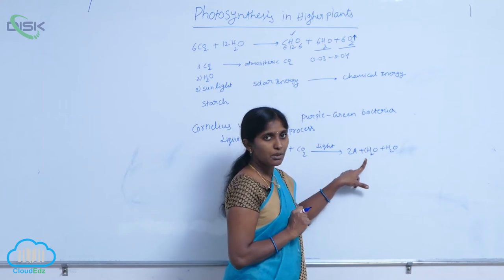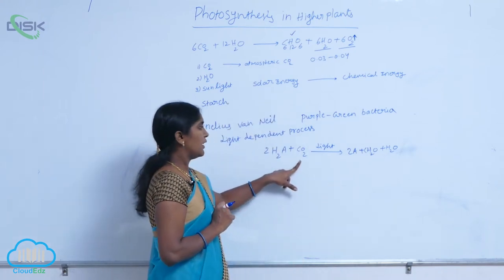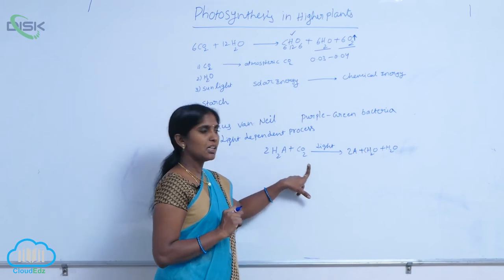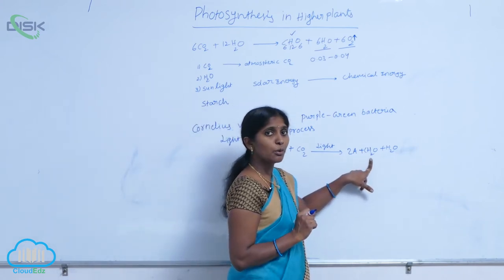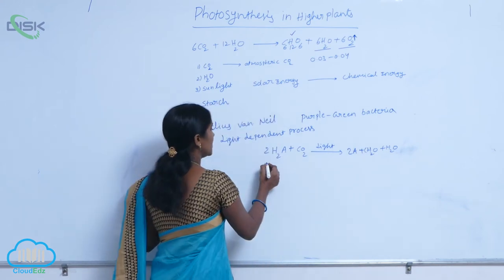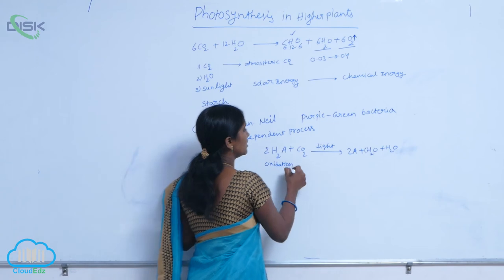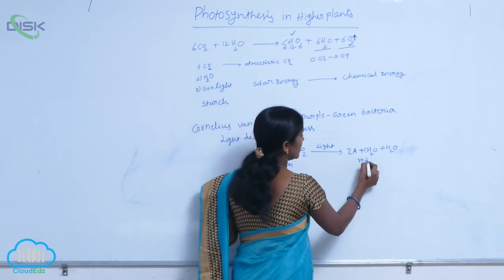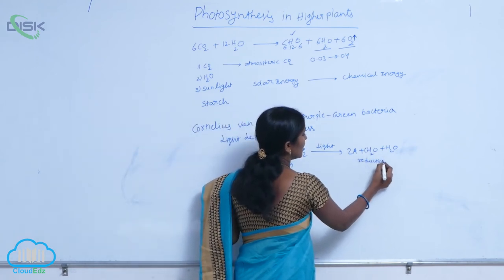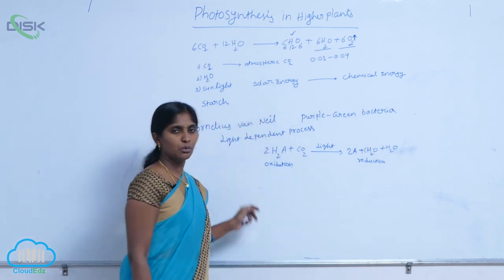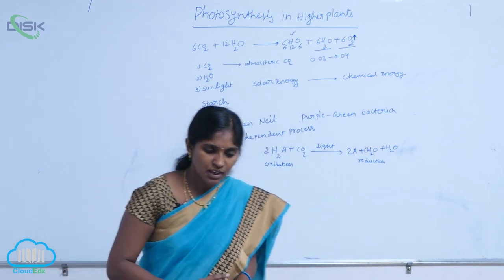It means reduction of carbon dioxide resulted to production of carbohydrate. There is oxidation. It means oxidation and reduction reactions are carried out during the photosynthesis.